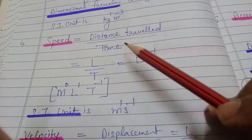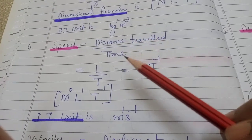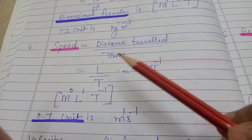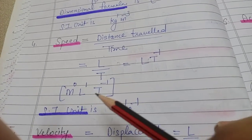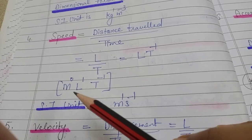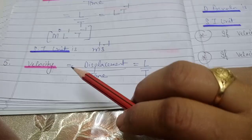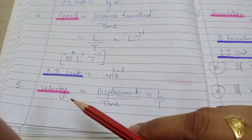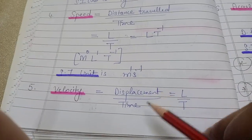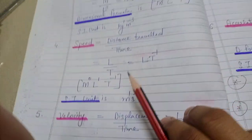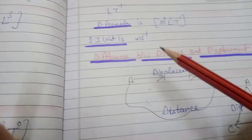आगे आता है speed। Speed का formula: distance upon time — कितना distance travel किया कितने time में। Distance L से, time T से — L की power 1, T ऊपर गया तो T⁻¹। Dimensional formula: [M⁰L¹T⁻¹]। SI unit: meter की power 1, second की power −1, यानी m/s। Velocity भी speed होता है — बस फर्क यह है कि velocity की direction होती है, speed की direction नहीं होती। Velocity का formula: displacement upon time। Displacement को भी L से denote करते हैं — L/T, यानी [M⁰L¹T⁻¹]। Same dimensional formula, SI unit भी same।